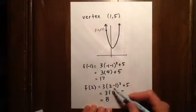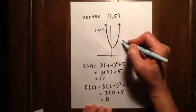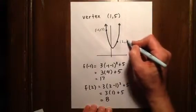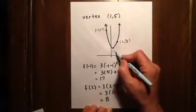And when x is positive 2, y is 8. We can imagine that point right about here somewhere, (2, 8). And of course, we have the vertex down here, which is (1, 5).